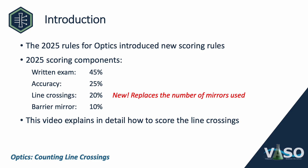The 2025 rules for optics introduced some new scoring elements. The components of the score in 2025 are: written exam counts for 45%, the accuracy score is 25% (same as last year), there's a new line crossing score that counts for 20% (replacing the number of mirrors used score from last year), and the barrier mirror counts for 10%, which is higher than last year. This video explains in detail how to score the line crossings component.